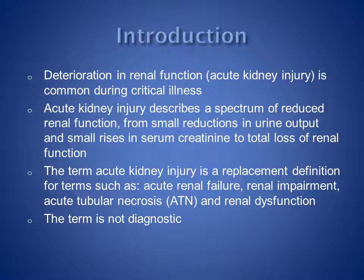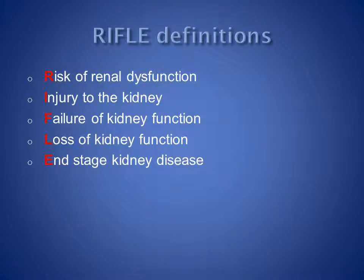Acute kidney injury describes reductions in renal function but it is not diagnostic. The most common way of defining acute kidney injury is using the RIFLE criteria. The letters stand for R — risk of renal dysfunction; I — injury to the kidney; F — failure of kidney function; L — loss of kidney function; and E — end stage kidney disease.